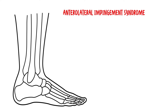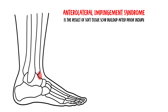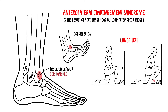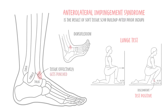Anterolateral impingement syndrome is a cause of lateral ankle pain. This condition is most commonly the result of soft tissue scar buildup in this specific location after prior injury to the ankle. The tissues effectively get pinched or sandwiched between the talus and the tibia and/or the fibular bones as the available space decreases during certain movements, mainly dorsiflexion. The lunge test, which causes pinching of the tissue between the talus and tibia, is positive and reproduces the discomfort.